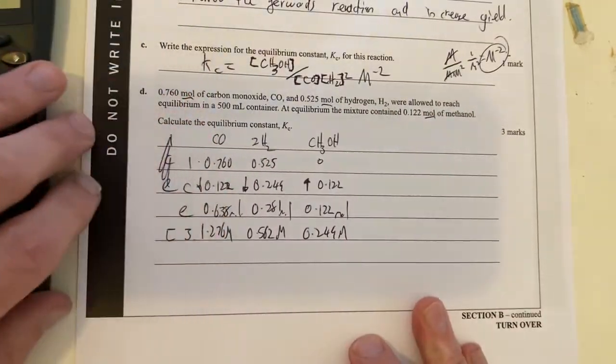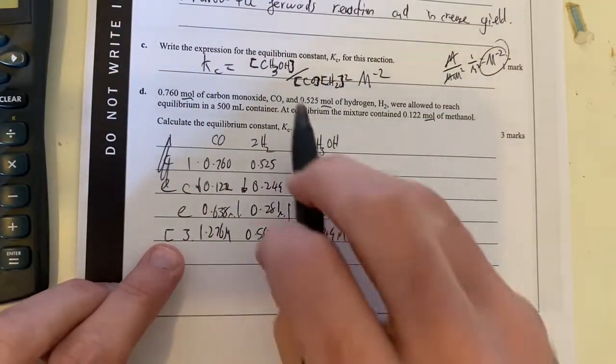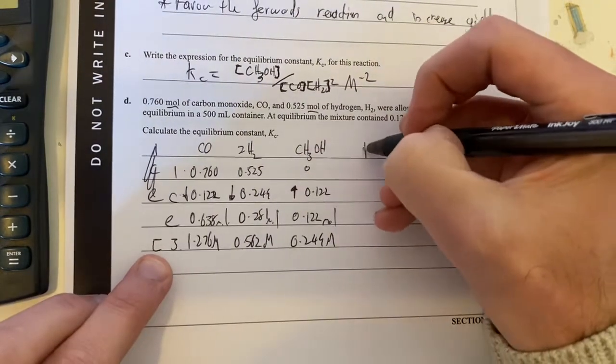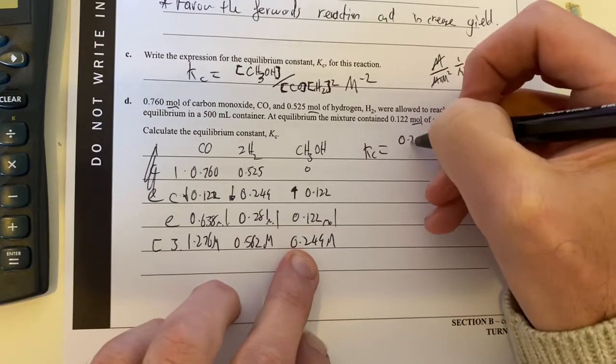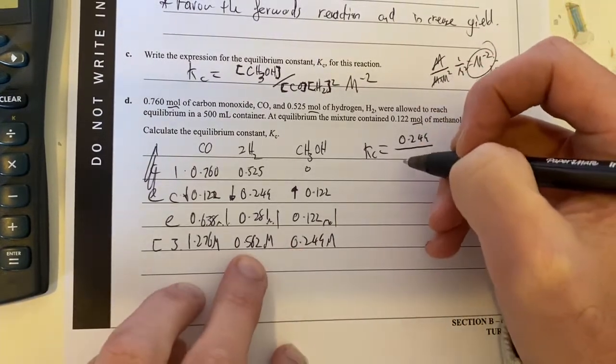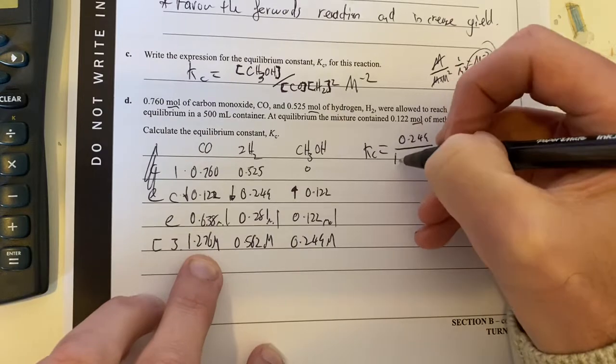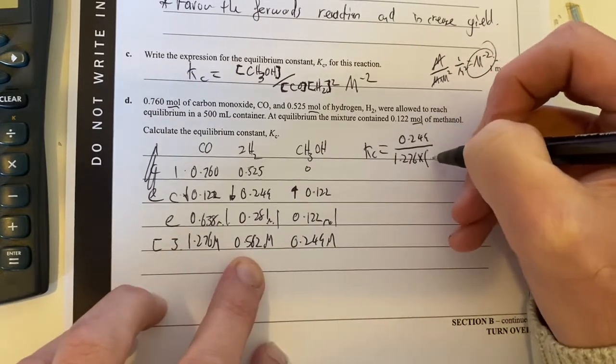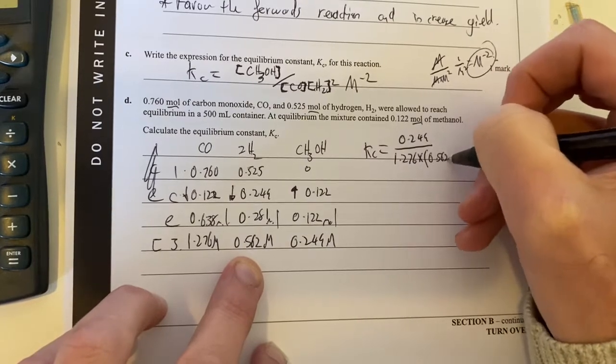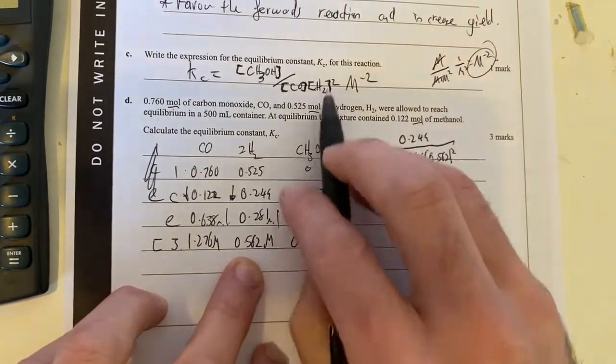So that's all good there. I can then bang this into my equilibrium constant. So my Kc is going to be equal to this guy here, which is 0.244, divided by this guy here, which is 1.276, times by this guy here, squared, 0.562 to the power of two, because my hydrogen was squared here.